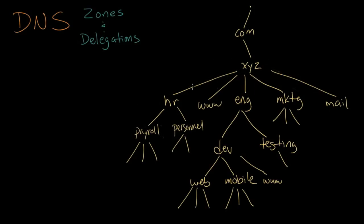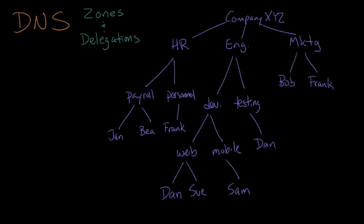We're going to show you something a little more familiar, which looks kind of like an organization chart for this company. So let's look and see what we got here. What we've got is this company called XYZ. It's divided up into three divisions: the human resources division, engineering, and marketing. And marketing is pretty small — it's just got a couple of people working for it.